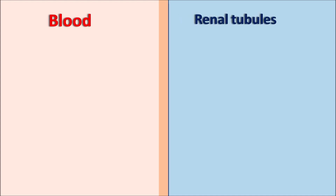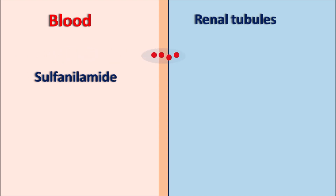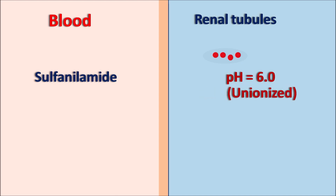Consider two compartments: systemic blood circulation and the renal tubules. Sulfonamide molecules are present in soluble form in the blood and are secreted into the renal tubules via glomerular filtration and tubular secretion. Within the renal tubules, pH is approximately 6, where sulfonamide mainly exists in the unionized (acid) form.